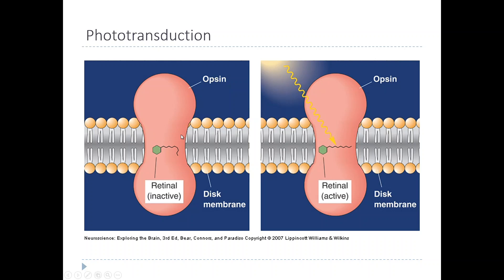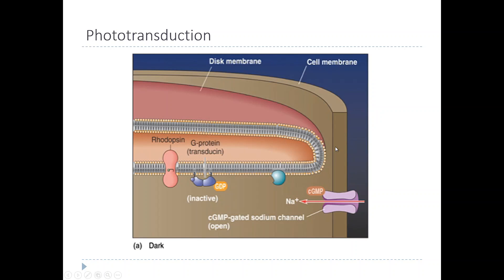The opsins carry around with them a molecule called retinal. Retinal is a molecule that when it's exposed to light in the visible spectrum, it converts from this form, what we call cis retinal, to this form, which we call trans retinal. Trans retinal is the active form of this molecule, which means it's going to activate the protein we call opsin.